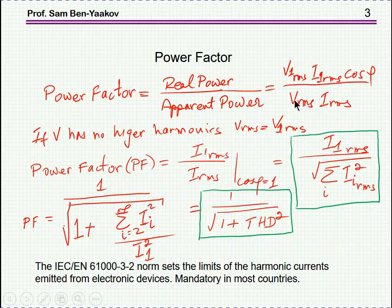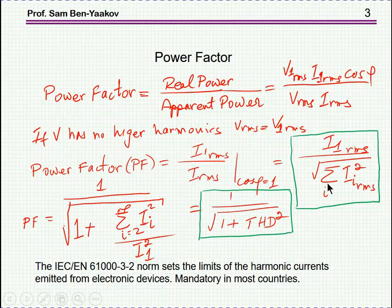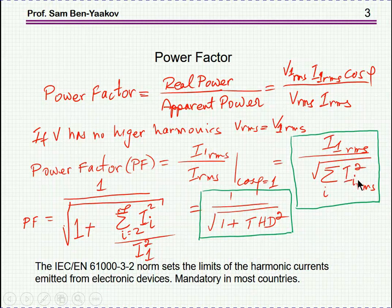If the voltage itself is fairly sinusoidal and there isn't too much distortion in it, then V_RMS would be almost like V1_RMS, so this can be factored out. And if we are dealing with a case in which there is no phase shift between the voltage and the current, then we end up with this relationship: the first harmonic of the main component of the current over the total RMS. The total RMS is calculated by taking the square root of the sum of all the components squared, because this is a power summation — you take the current to the power of two, which is proportional to the power, and sum it up over all the components.